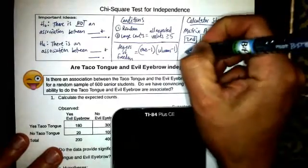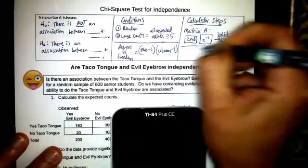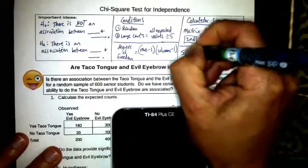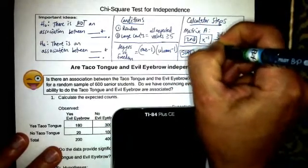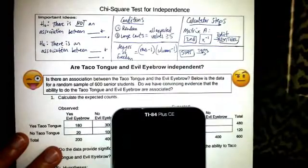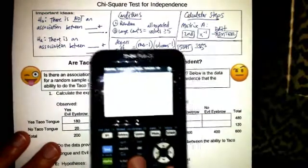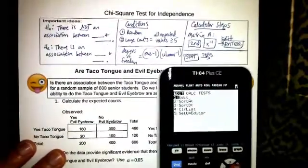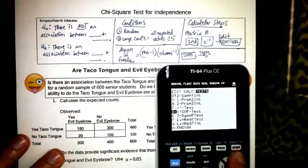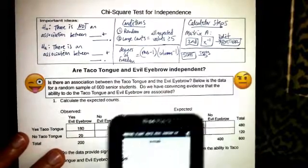And then to actually run the test, get that chi-squared test, we're going to hit stat over to tests and then I believe it is C. So let's do that, stat over to tests and then I recommend going up to C for chi-squared test.